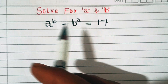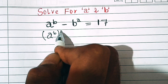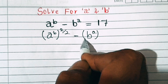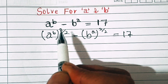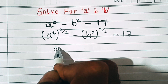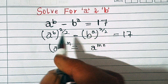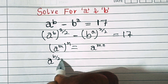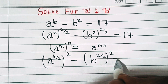In the first step, we'll write this equation as (a^b)^(2/2) minus (b^a)^(2/2) equals 17, because 2 over 2 is equivalent to 1. Now we'll apply the formula (a^m)^n = a^(m times n), so this can be written as (a^(b/2))² minus (b^(a/2))² equals 17.